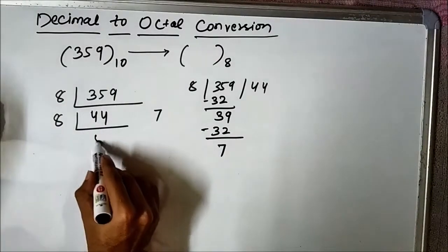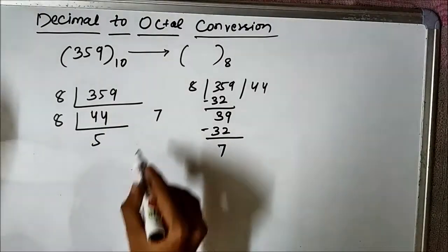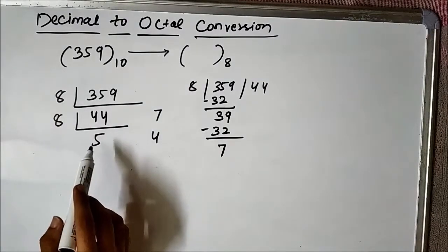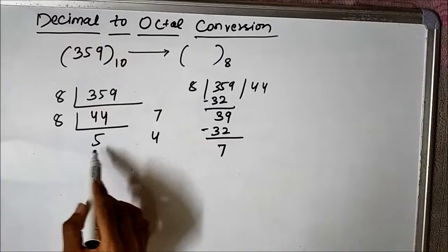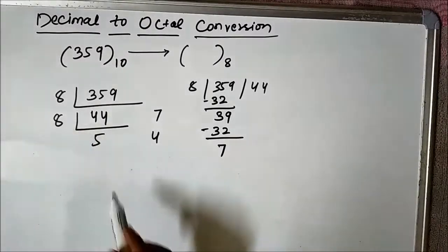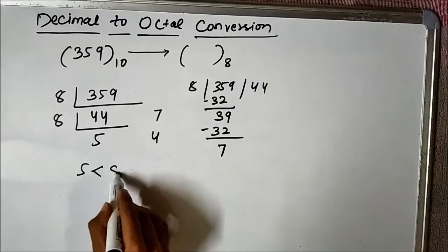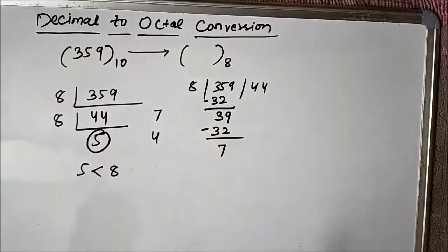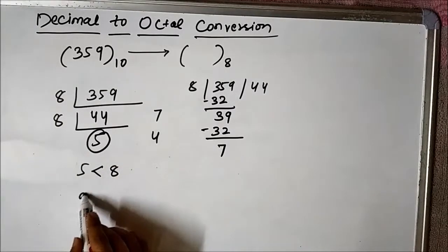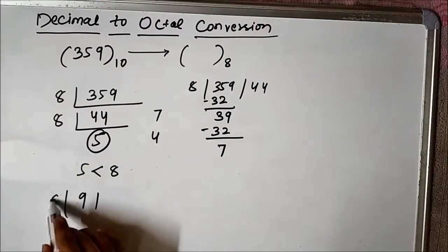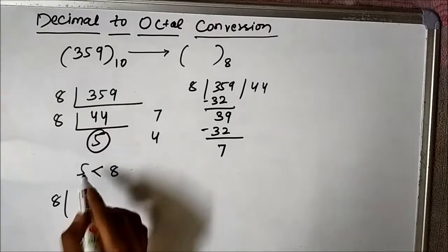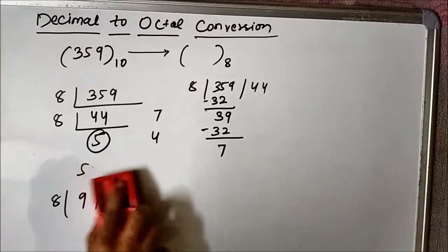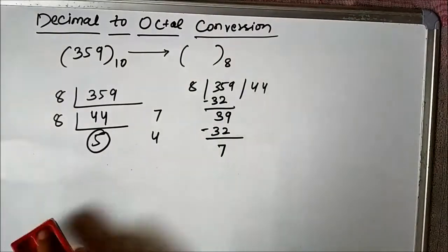44 divided by 8: 8 into 5 is 40, so the quotient is 5 and the remainder is 4. Now you have to proceed until the quotient is less than the base. Here 5 is less than 8, so you stop there. If it had been 9 we would have performed another division, but since it is 5, which is less than 8, we stop here.